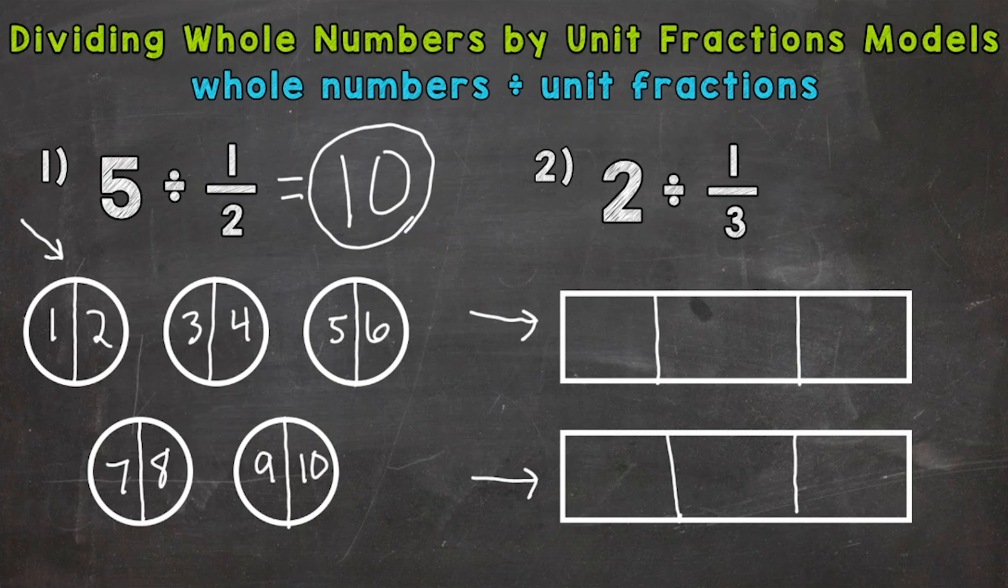And now we need to count how many pieces we have. Well, one, two, three, four, five, and six. So our answer to two divided by one third equals six.